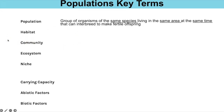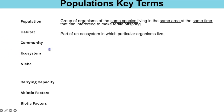Populations is a two mark definition. Your definition is: it's a group of organisms of the same species living in the same area at the same time — that first part is one mark. The second mark is that they can interbreed to make fertile offspring.